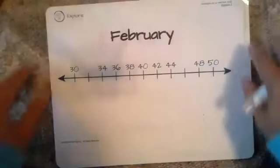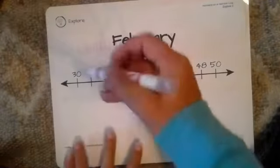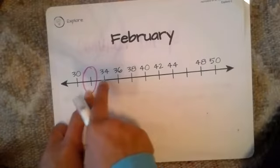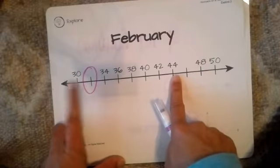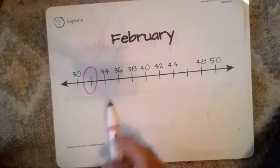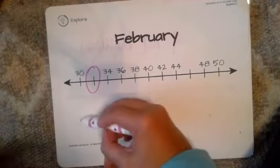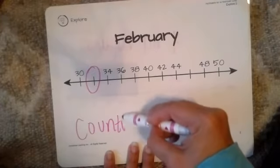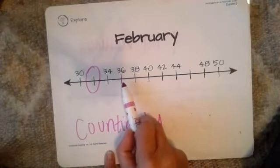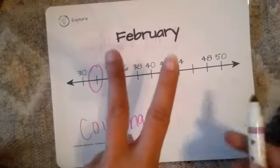Let's look at another example. We have another blank, but this time it's at the beginning, so we don't have a pattern yet. We need to look at the rest of these numbers around this blank and see how we can fill it in. How are they counting? What is the pattern between 34, 36, 38, 40? Are they counting by ones? No — because if they were counting by ones, it'd be 34, 35.